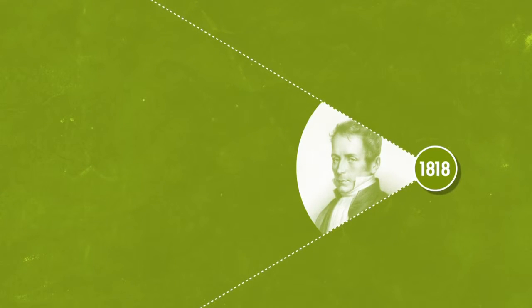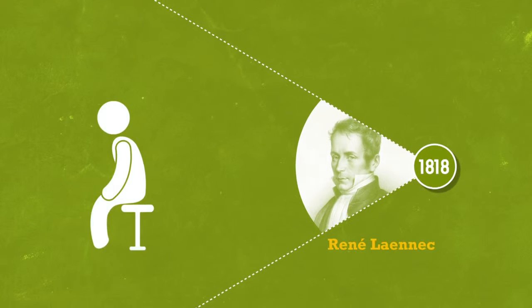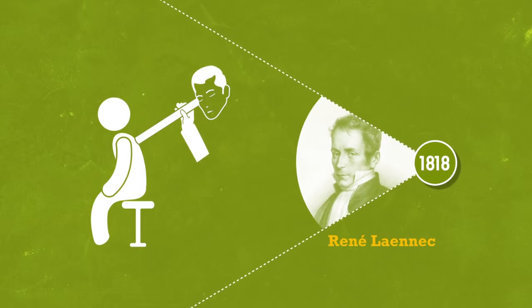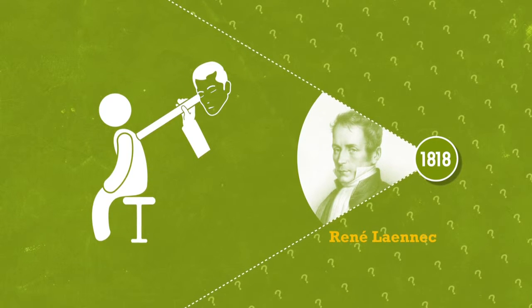In 1818, French physician René Laennec invented the stethoscope. Auscultation with the stethoscope revolutionized diagnosis of tuberculosis, but it was still not known how it was spread or how to treat it.